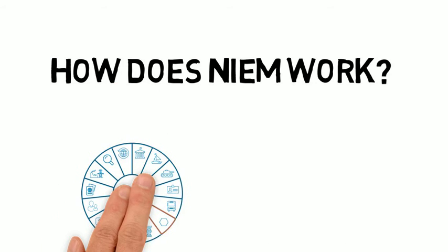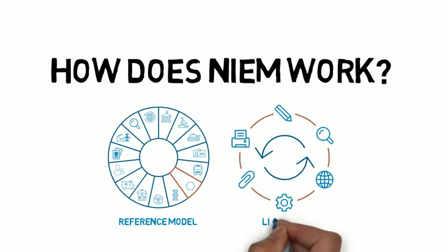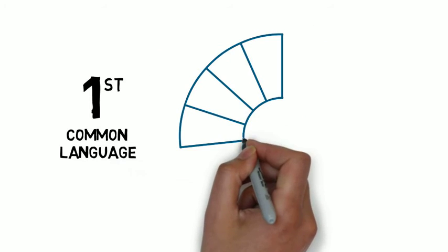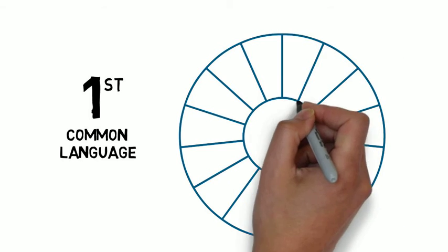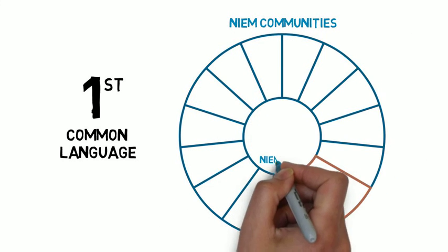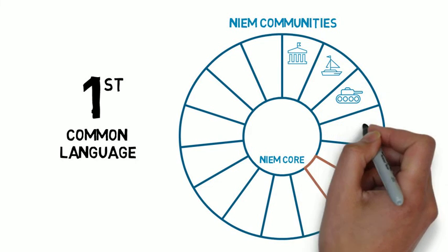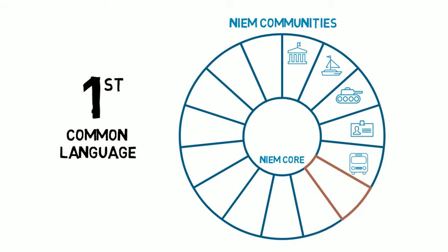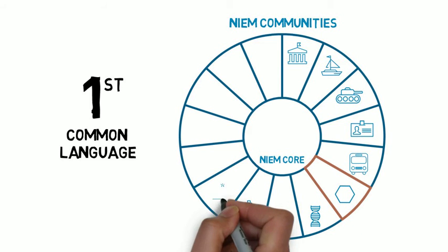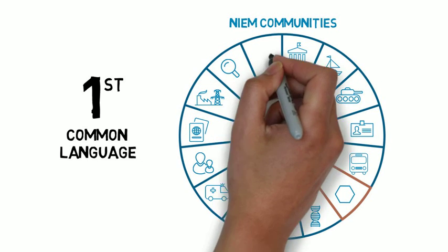So how does NEEM work? There are two concepts that help illustrate NEEM and how it works. The first is common language. NEEM is a reference model that includes community-specific content, as well as core content, with common terms that are agreed upon by all the communities that use NEEM. In this way, NEEM ensures interoperability, because all information used in NEEM-based exchanges use consistent definitions.